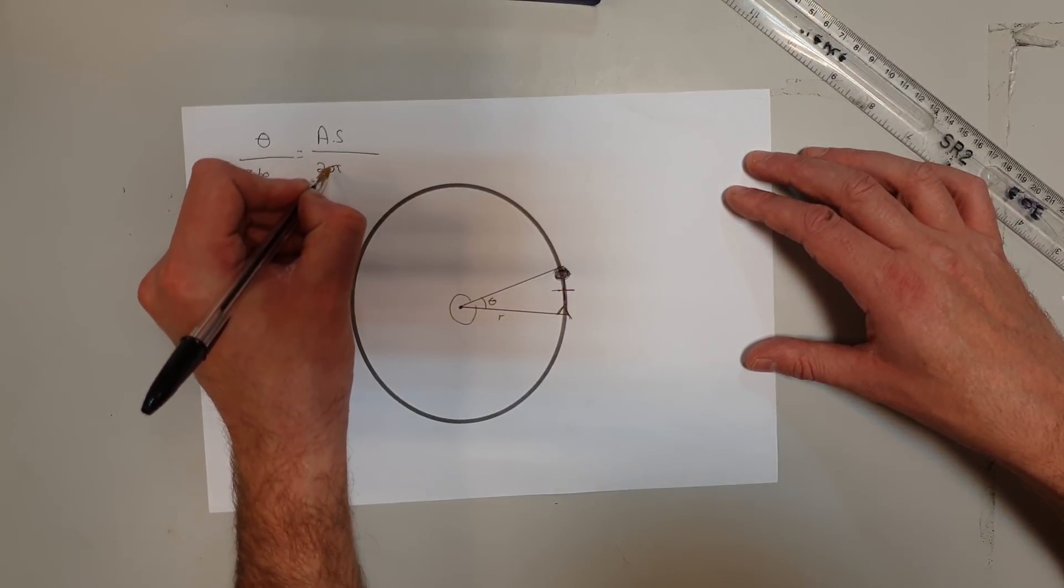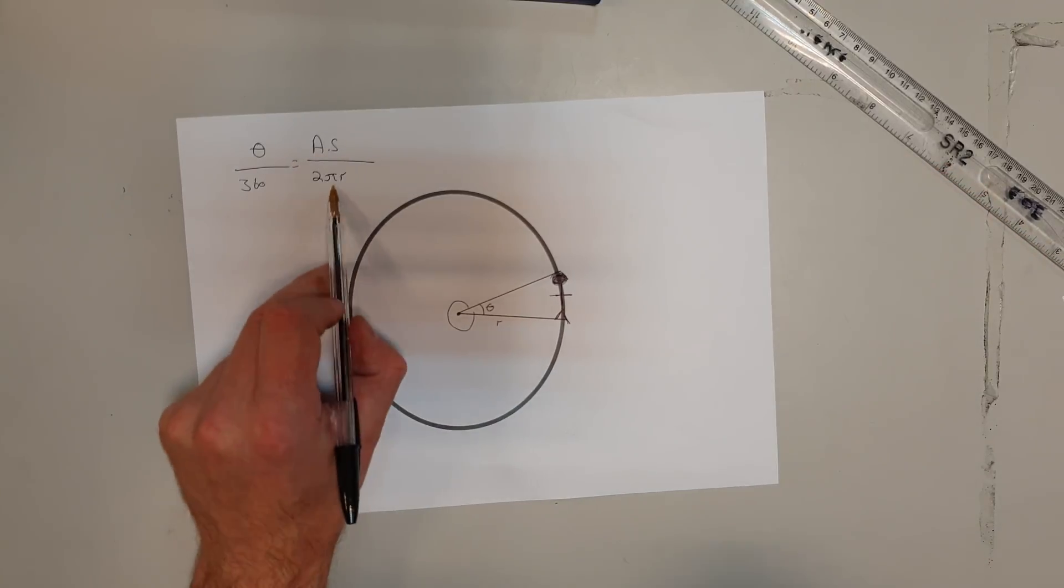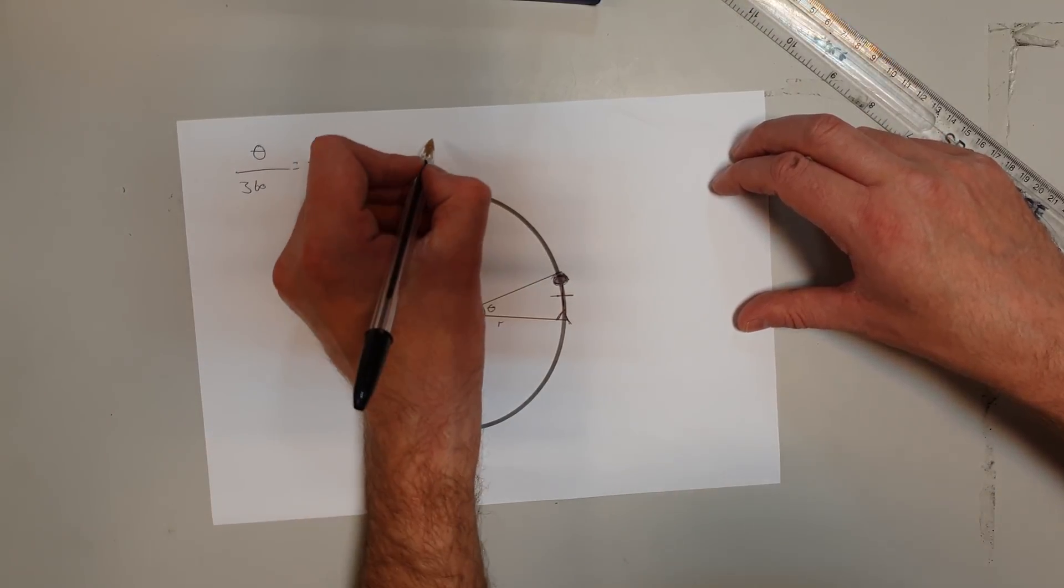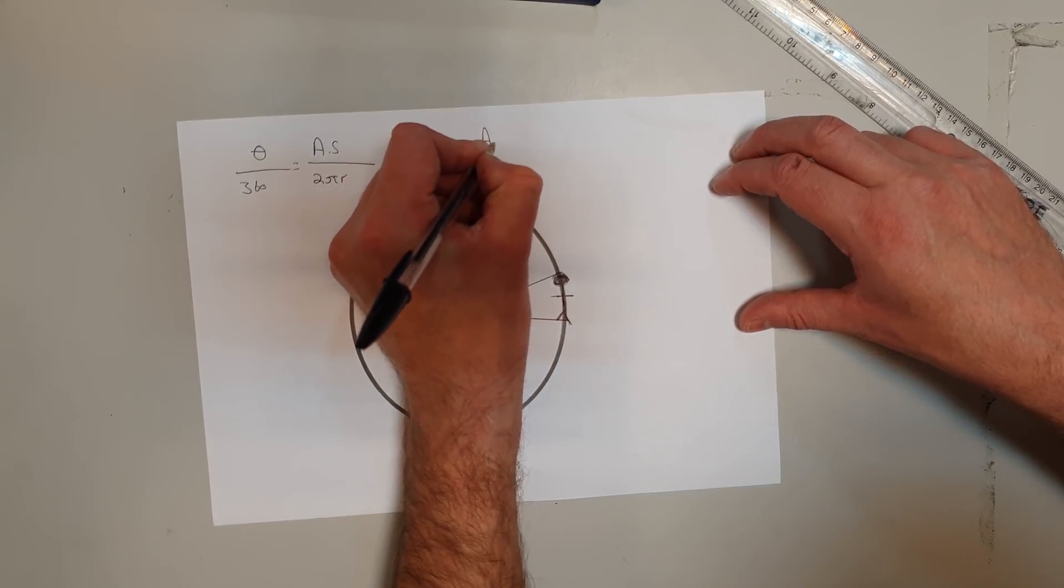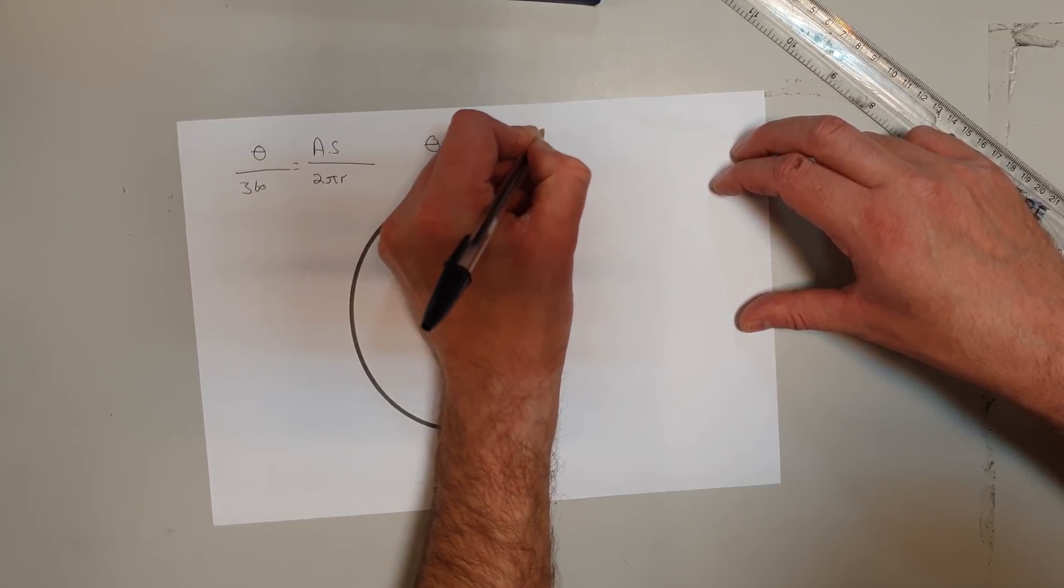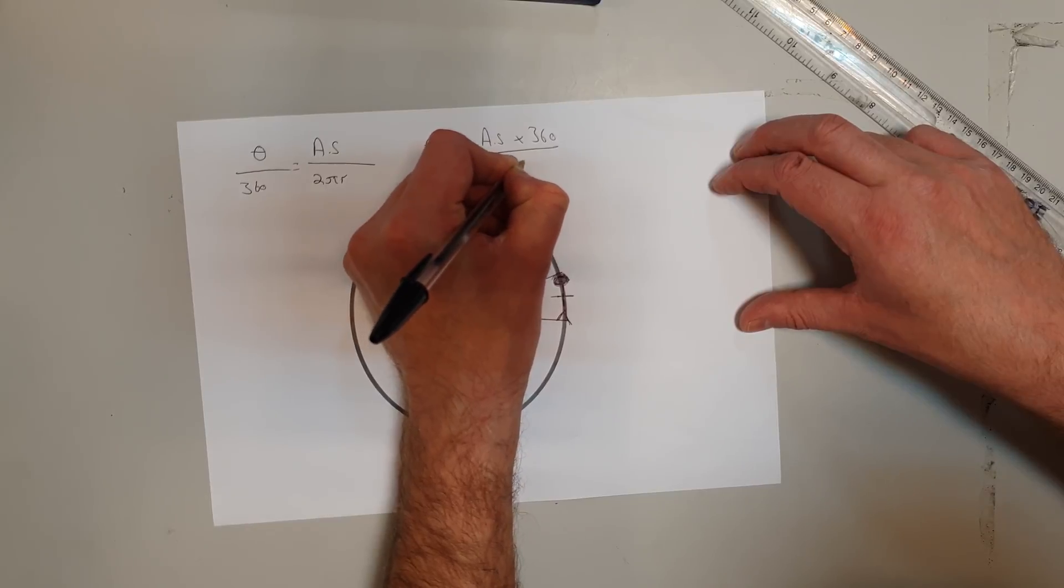Now, a circle, the circumference is 2πr, which is a distance. I can rearrange this equation to give me the angular size equals the actual size times 360 divided by 2πr.